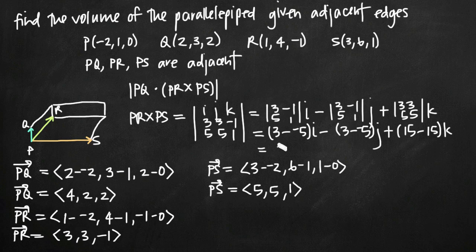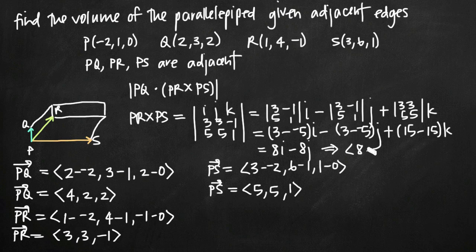When we simplify further, we get 8i minus 8j plus 0k, so we can just call this 8i minus 8j. In vector form that is (8, -8, 0). That is the vector representation of the cross product of PR and PS.